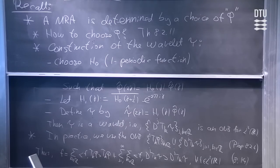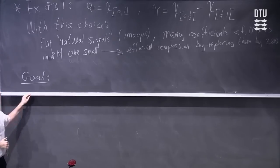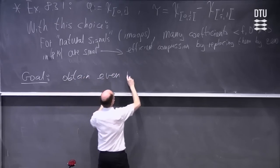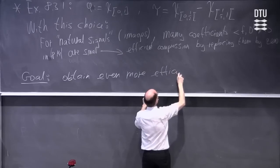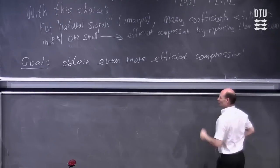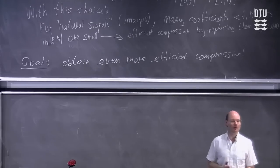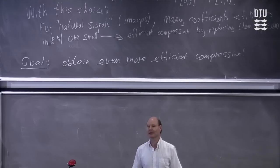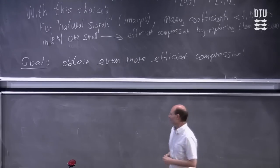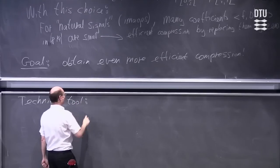Our goal is to obtain even more efficient compression. We just need to take a few steps to reach this goal. We will introduce a technical condition you have not seen before — actually you have seen it because there was an exercise last week about vanishing moments. I didn't speak about vanishing moments at the lecture, but I will do it now. So we need a technical tool: the definition of the vanishing moment.